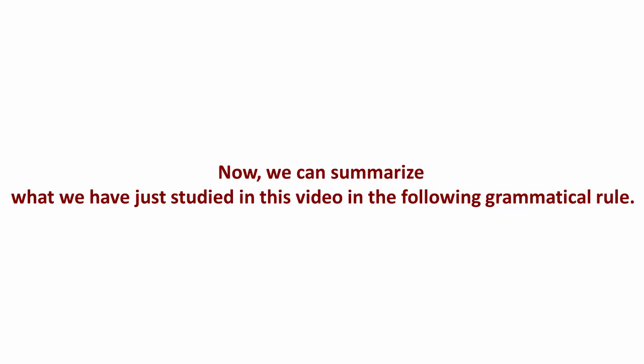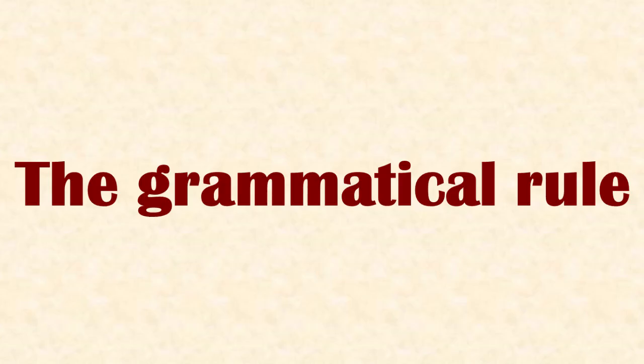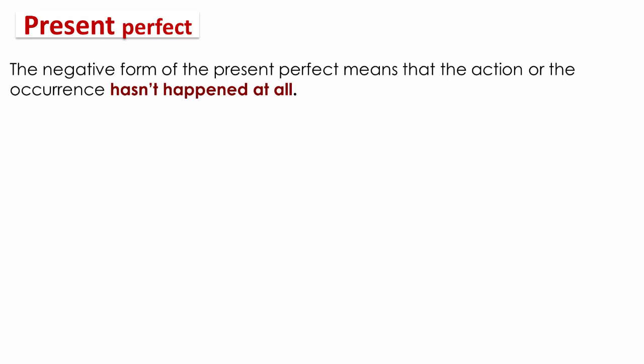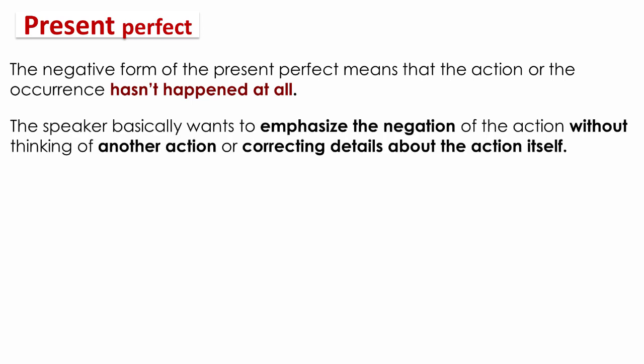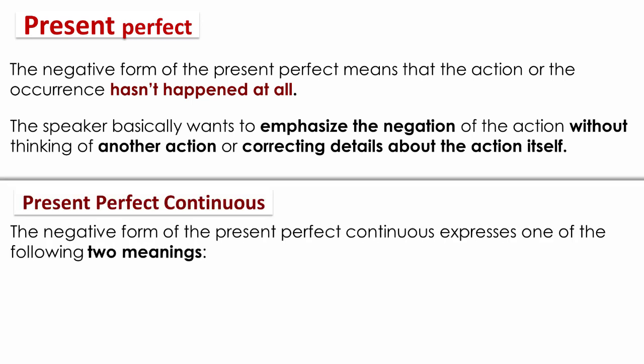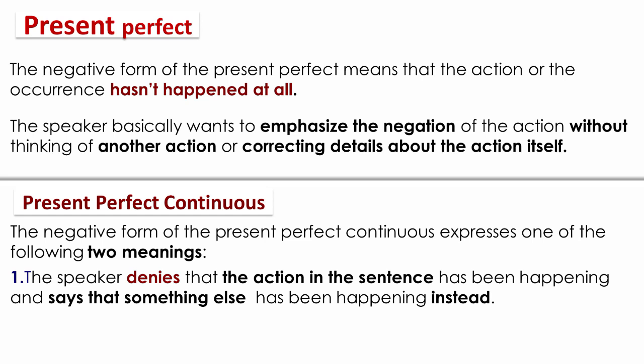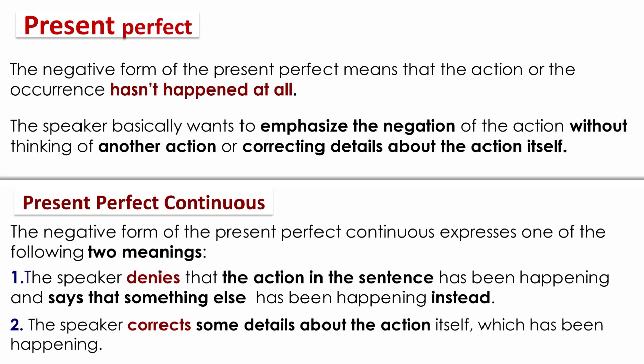We can summarize what we've studied in this grammatical rule: The negative form of the present perfect means the action or occurrence hasn't happened at all — the speaker wants to emphasize the negation without thinking of another action or correcting details. The negative form of the present perfect continuous expresses one of two meanings: the speaker denies that the action has been happening and says something else has been happening instead, or the speaker corrects some details about the action itself.